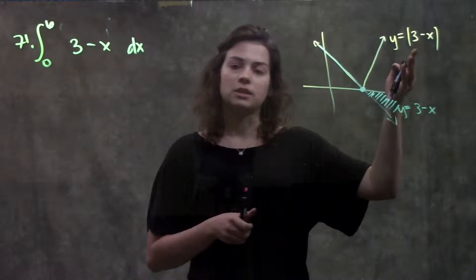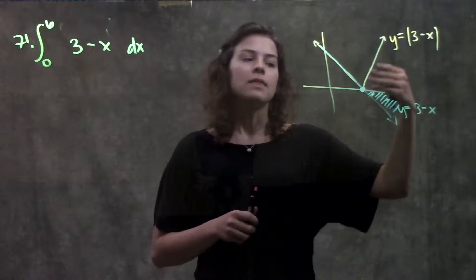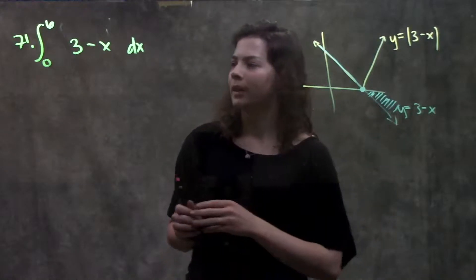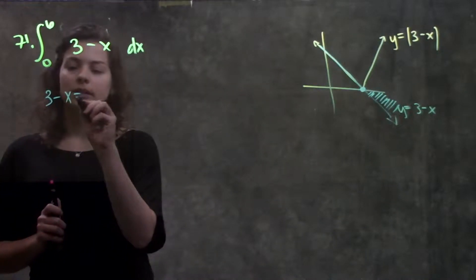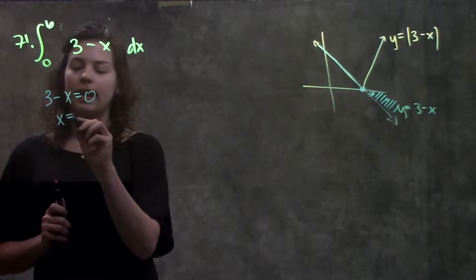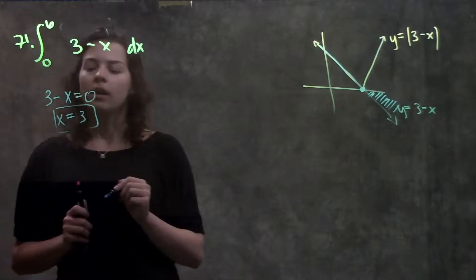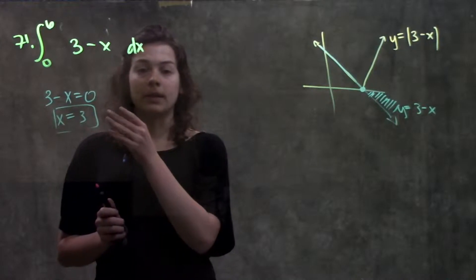And then just make sure that both of these areas have positive values. Because I know in my original function, the absolute value of 3 minus x, they should both be positive. So let's go ahead and do that. So I take my function, set it equal to zero, solve for x, and I get that x equals 3. And this is the point where I'm going to split my integral.